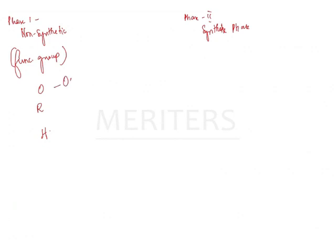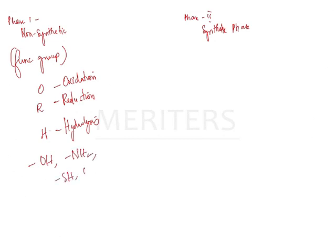O stands for oxidation, R stands for reduction, and H stands for hydrolysis. In phase 1 reactions, smaller polar functional groups like alcohol (OH), ammonia groups, sulfhydryl groups, and aldehyde and acetic acid groups are either added or unmasked. If already present on the lipid molecule, these products will then undergo phase 2.